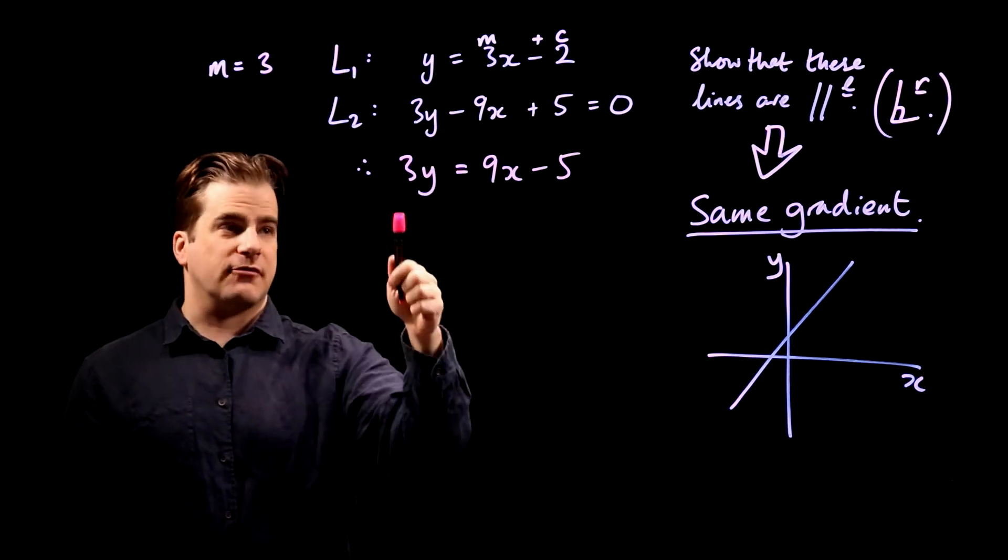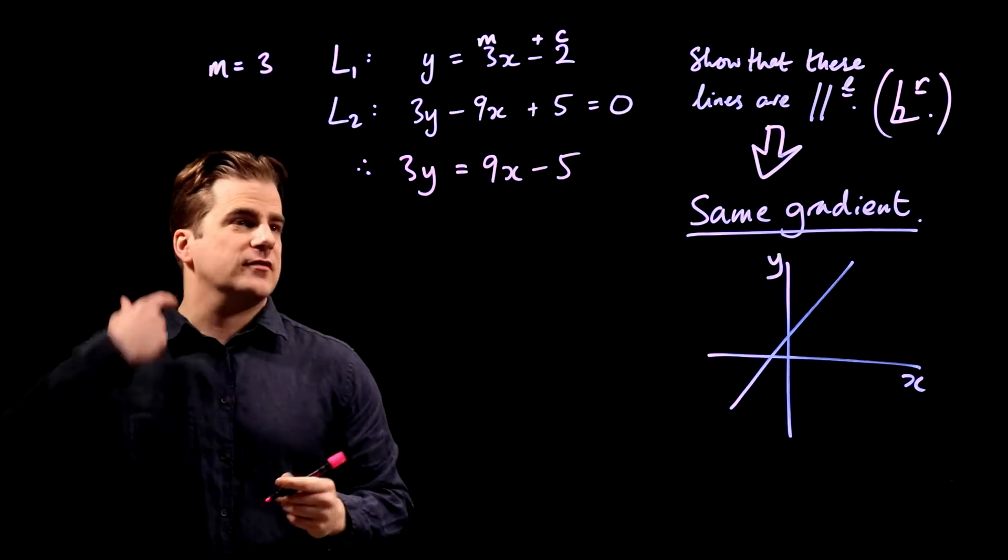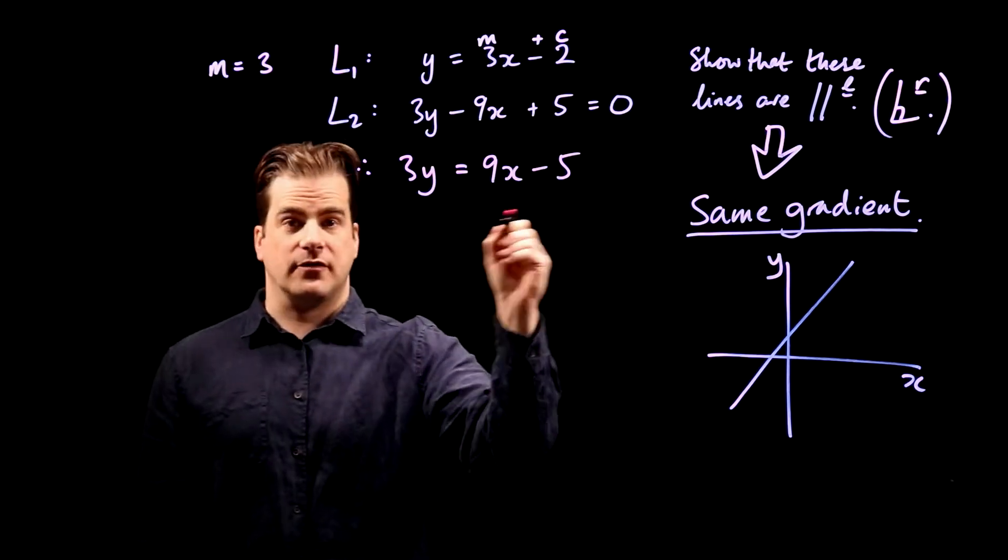Good. It's in the form of 3y equals something x plus c. So to turn it into y, we need to divide both sides by 3.